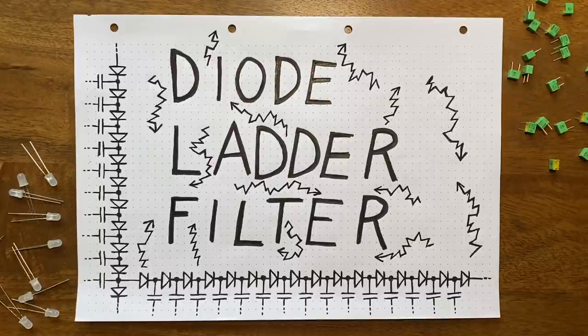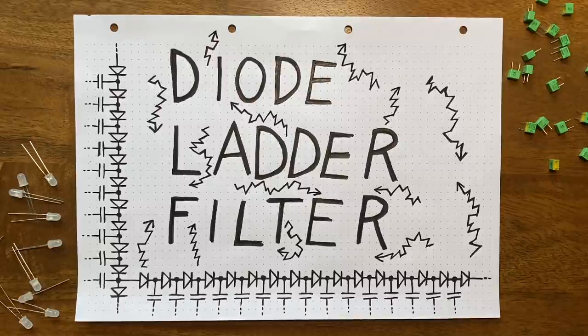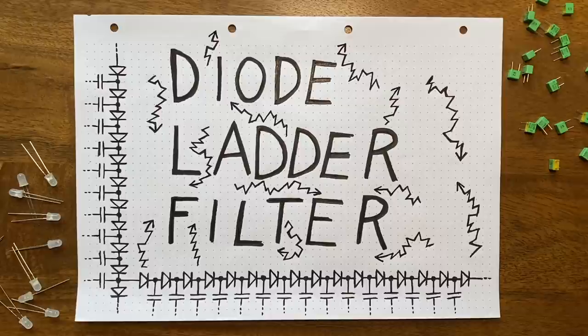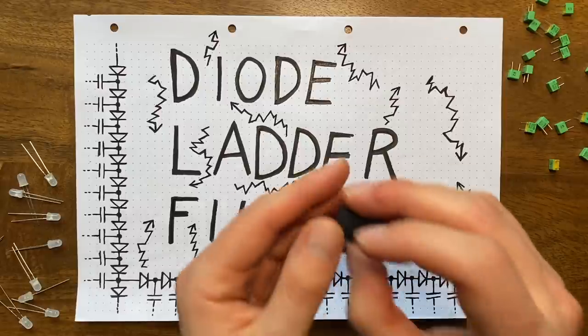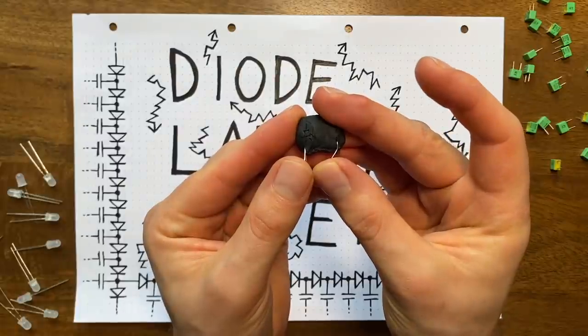Now last episode, we began thinking about how we can control a filter's cutoff point with a voltage instead of with our hands. To keep it nice and simple, we decided to start out with a DIY fan favorite, the homemade Vactrol. And while that did work okay, it also felt like a pretty half-baked messy solution to me.